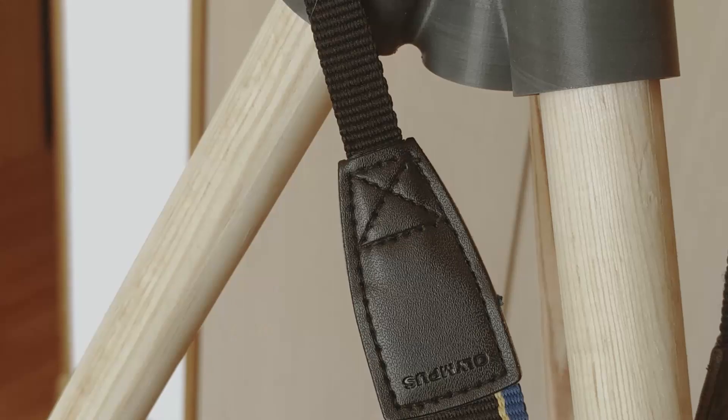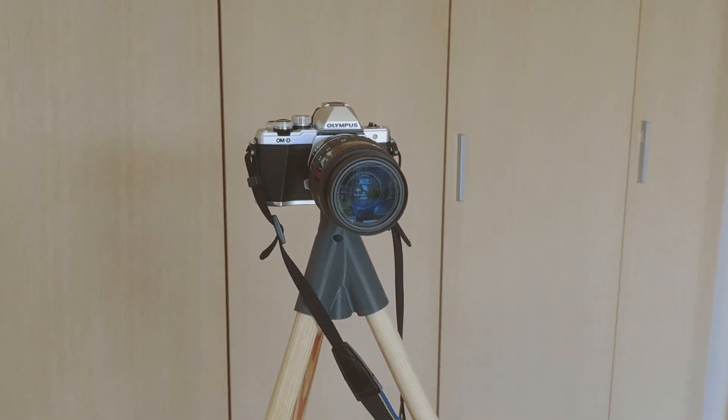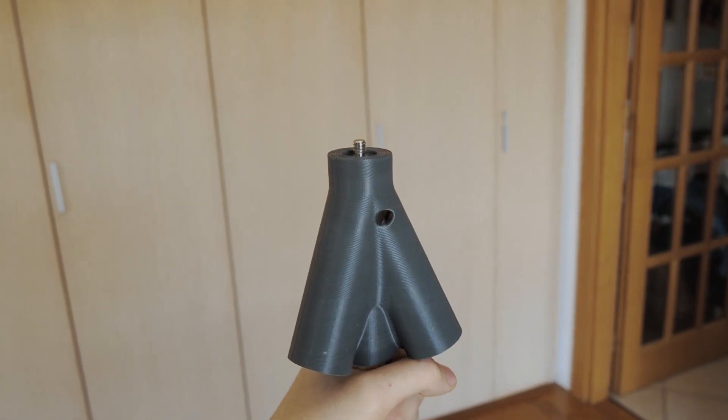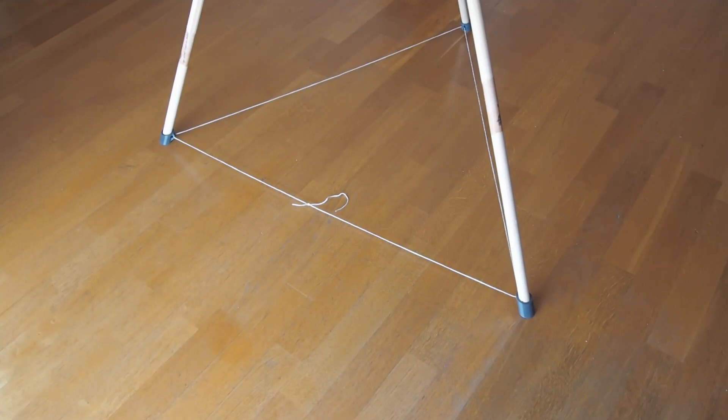It's a modular system, which means it is really versatile and future proof. The essential kit is composed of the main head which can be used both in the tripod and monopod configuration, a hook and 3 feet.